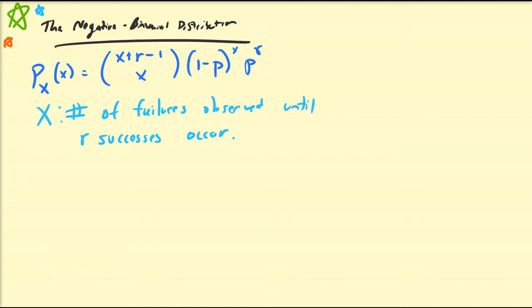Hello there. In the previous video we introduced the negative binomial distribution and random variables associated with this distribution, and did a couple of examples. In this video we're going to derive the moment generating function for the negative binomial random variable so that you can calculate the moments — for example the expected value, the variance, the third moment, the fourth moment, or pretty much any order of moment that you are interested in.